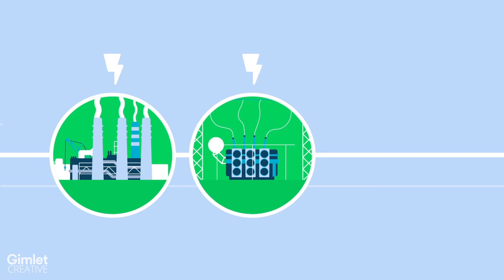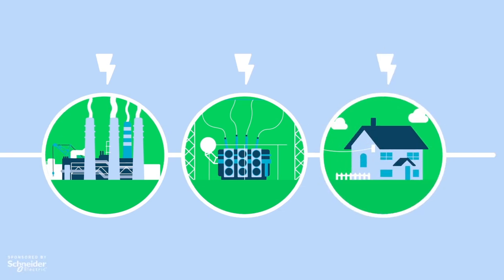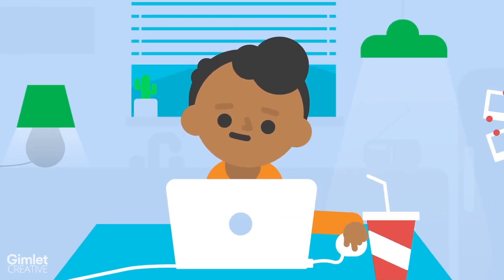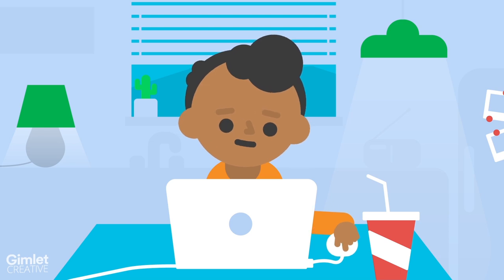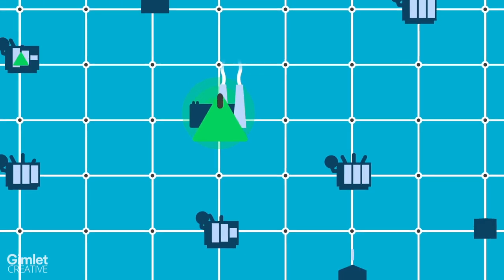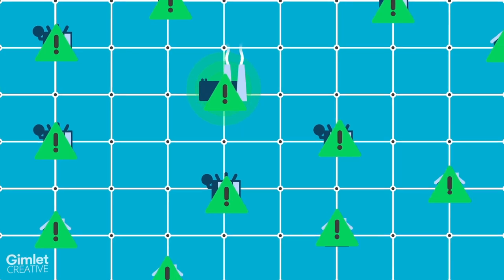Those lines carry electricity from power plants to substations, which eventually gets to us. And this grid, which is key to our modern lives, is actually vulnerable. One person doing one mistake in one place can take down the whole thing.